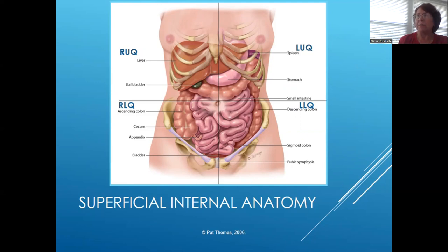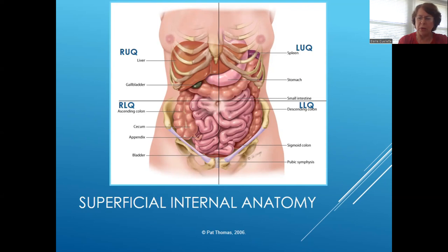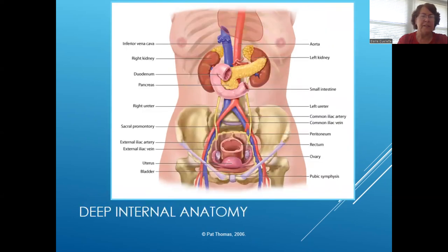An enlarged spleen in the left upper quadrant is very painful, and sometimes you'll see that after a bad case of mono. I've seen one case of a spleen problem besides mono — a student who had a skiing accident with a tiny tear in the spleen that was bleeding, causing a lot of right upper quadrant pain. The appendix is the most concerning structure in the right lower quadrant, and the small and large intestines cover most of the rest of the lower abdominal area. The deeper structures include the kidneys, ovaries, bladder, ureters, pancreas, etc.